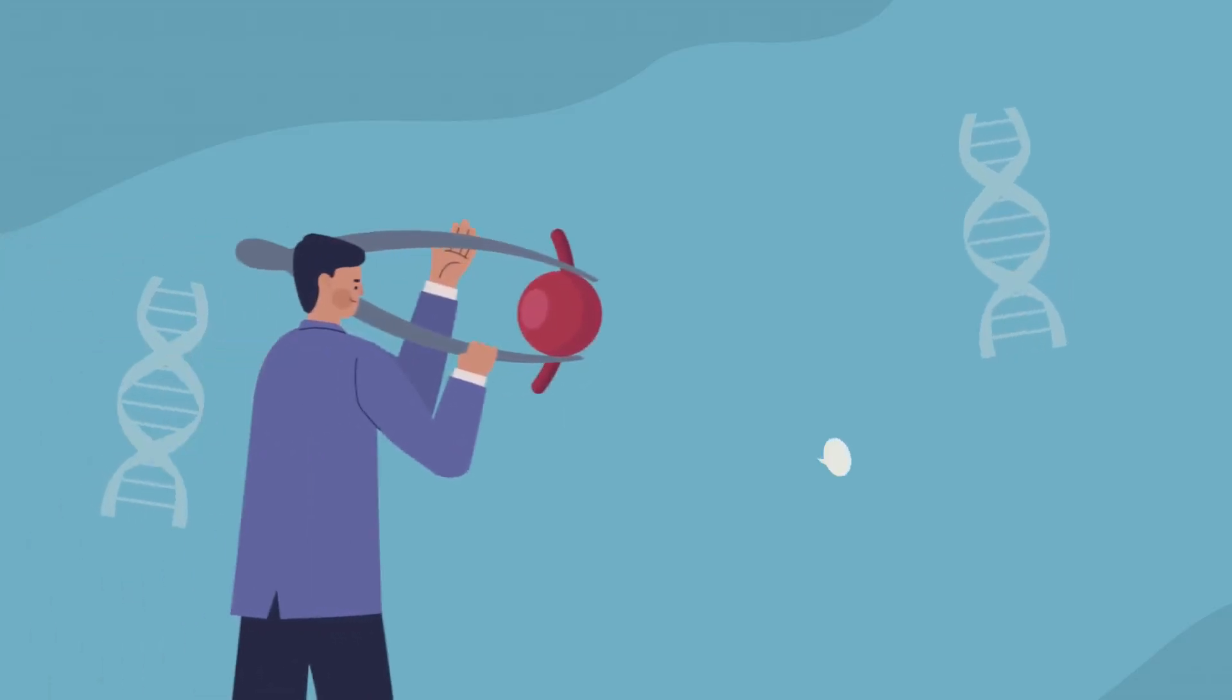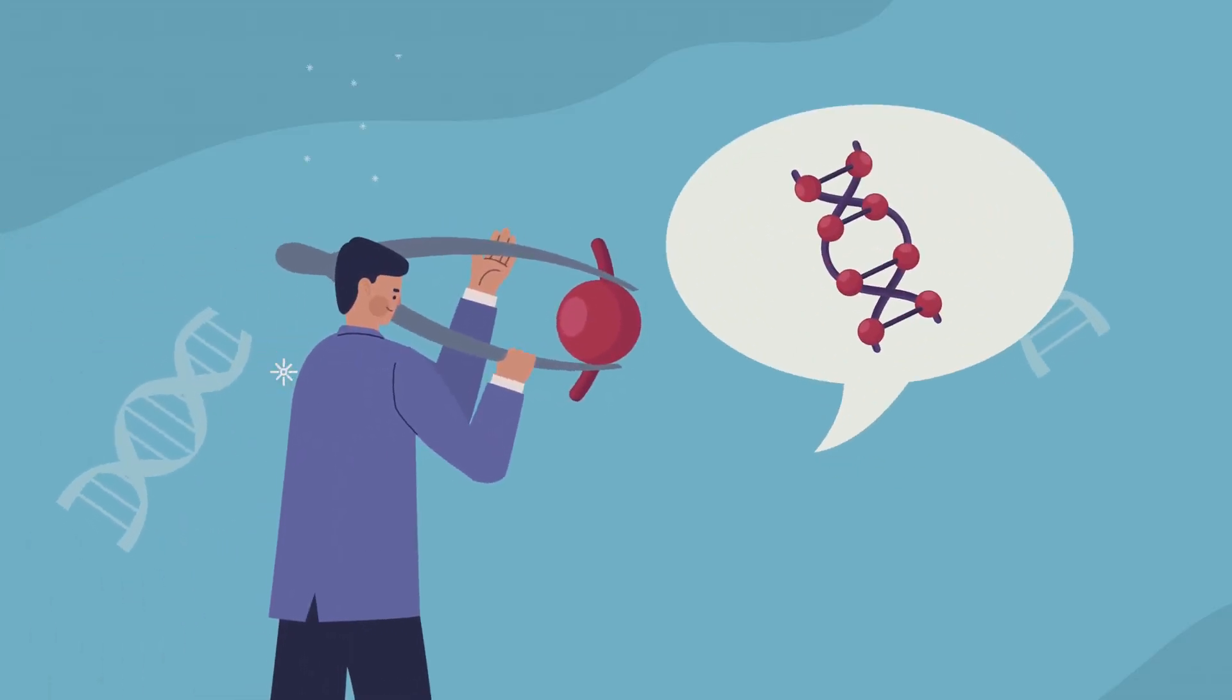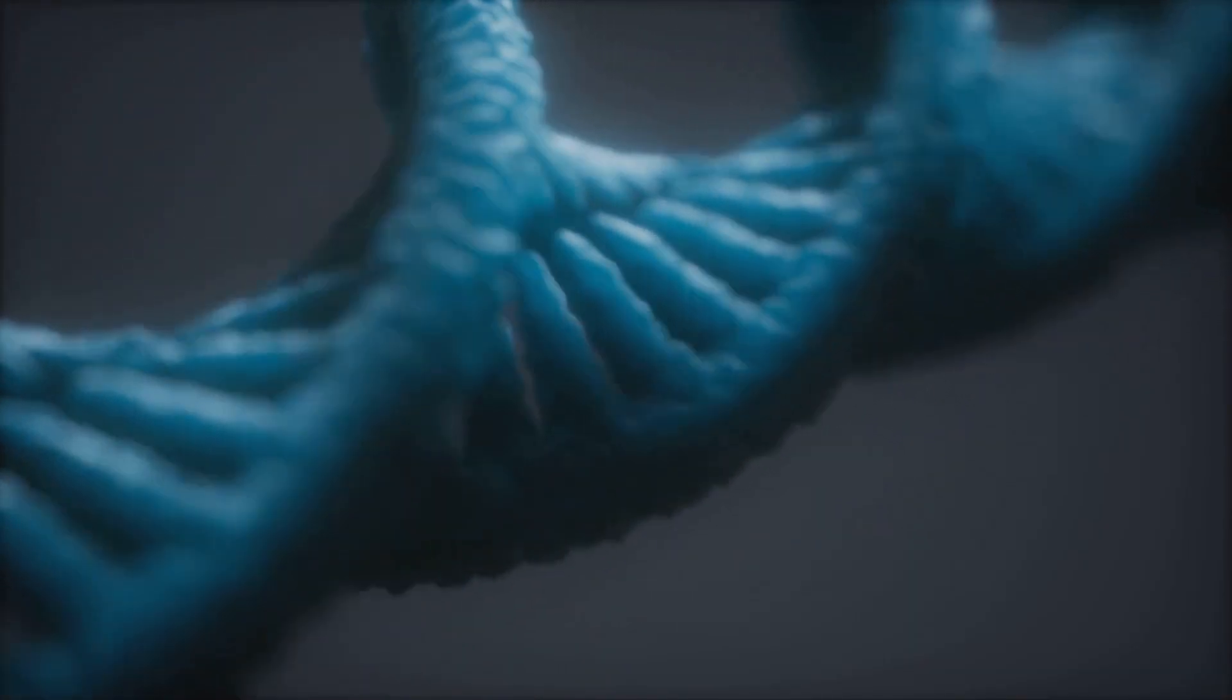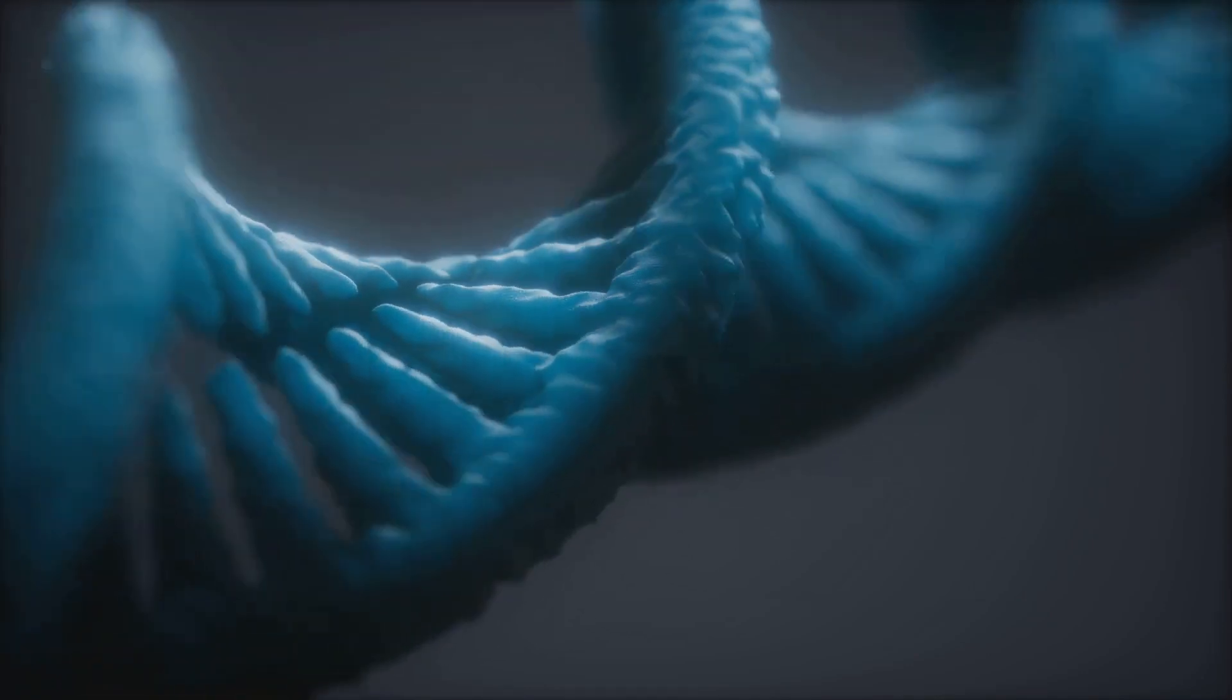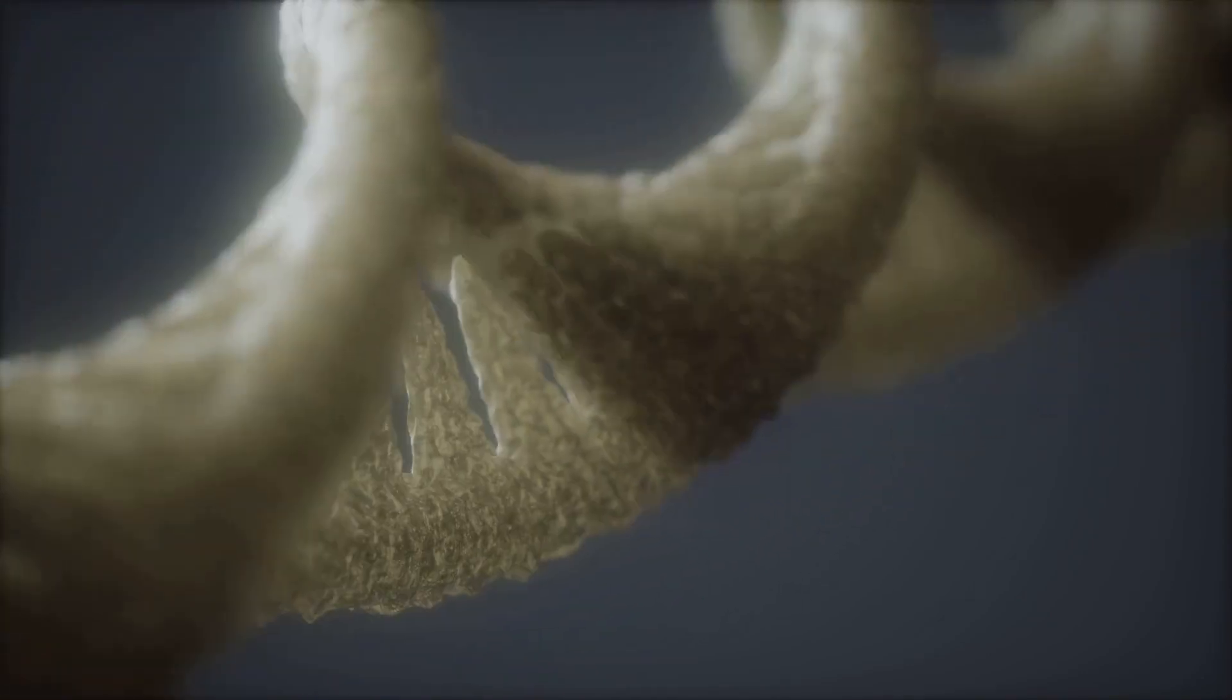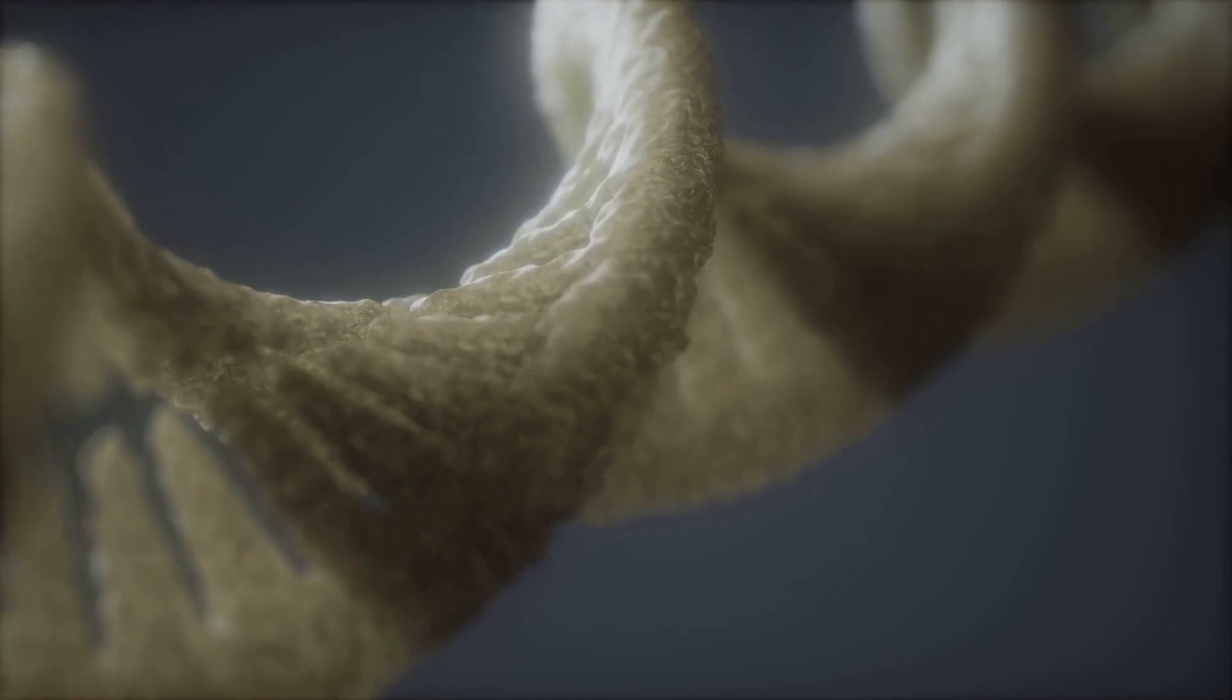Replication starts at specific origins, with multiple origins in complex organisms for efficiency. The leading strand is synthesized continuously, while the lagging strand is synthesized in fragments. This semi-conservative replication results in DNA molecules with one original and one new strand.